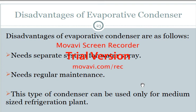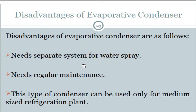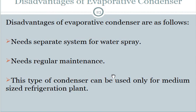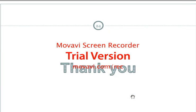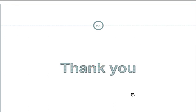The disadvantages of the evaporative condenser are: it needs a spray head system for water spray, requires regular maintenance, and can only be used for medium-size refrigeration plants. Thank you — in the next class, the seventh week, we will study the expansion valve.